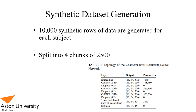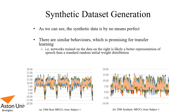We generate the synthetic datasets: 10,000 synthetic rows of data are generated for each subject, split into four chunks of 2,500 so we can test 2,500, 5,000, 7,500 and the full 10,000 and observe how each affects the result. The table in the bottom right shows the topology of the character level recurrent neural network. As we can see from this example, the synthetic data isn't perfect — on the left we have subject one speaking a line, and on the right we have the MFCCs trying to generate synthetic data from subject one. There are similar behaviours, which is promising, and as we found, there is useful knowledge in there to help classify the real subject.